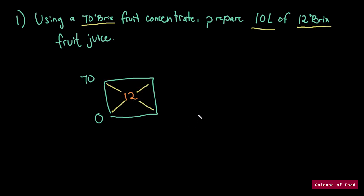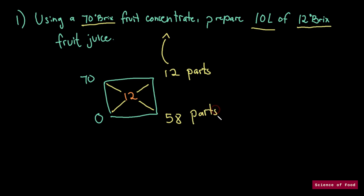So 70 minus 12 gives us 58, and 12 minus 0 gives us 12. We still need to calculate how many liters of fruit concentrate and how many liters of water we need to prepare 10 liters of fruit juice. Interpreting what we have: you would need 12 parts of the fruit concentrate and 58 parts of water. We can get the percentages of this solution so that we can easily calculate how many liters we would need for each.